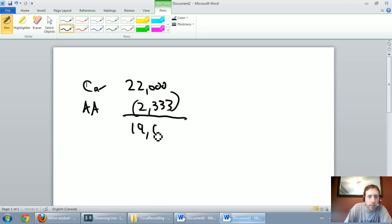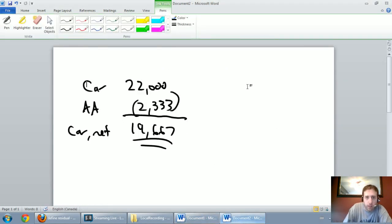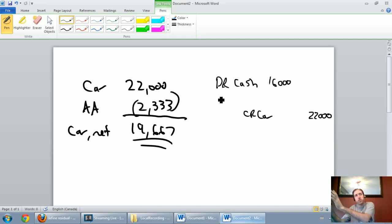We have a car that's worth $19,667 on our books, our car's net book value. And now we sell it, but rather than selling it for $21,500, we're going to sell it just for $16,000. So let's sell our car. We get money for our car, so I'm going to debit cash for $16,000. I'm going to credit my car to get it off the books, $22,000. I'm also going to get rid of its accumulated amortization. Accumulated amortization is a credit account. To get rid of it, I need to debit it. So let's debit our accumulated amortization on our car for $2,333.